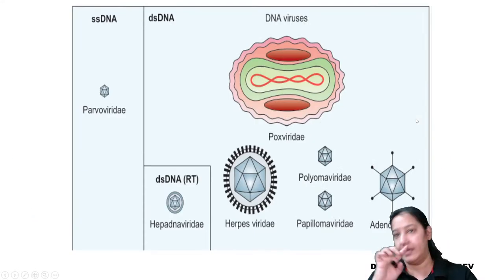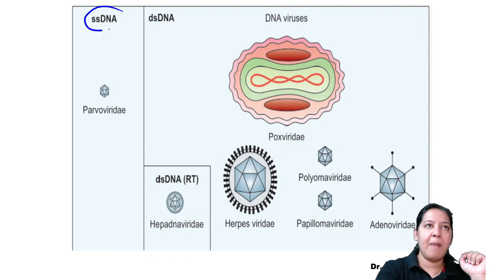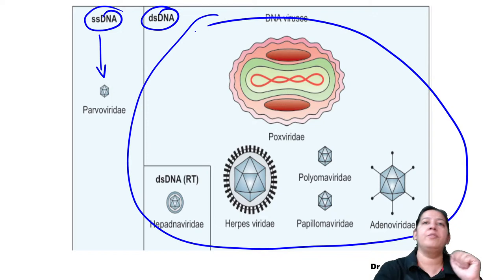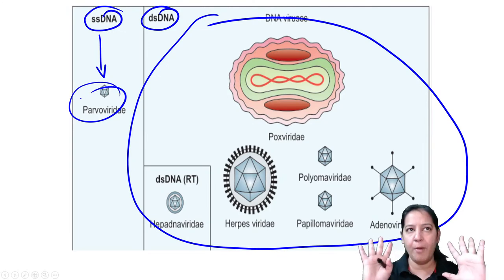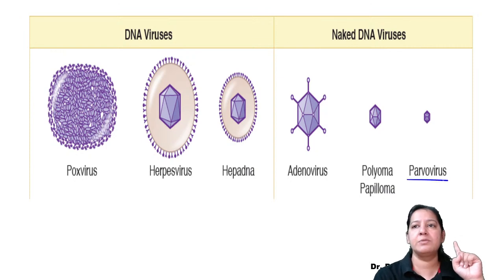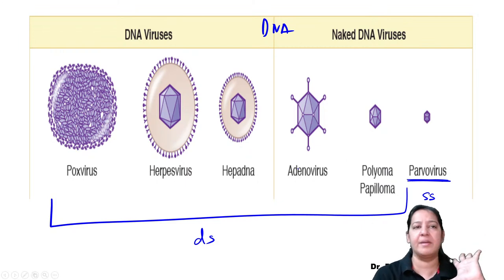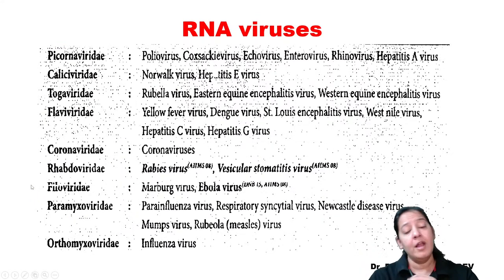This is an exception you must learn. All DNA viruses have double-stranded DNA except Parvo virus, which has single-stranded DNA. Only Parvo is single-stranded; remaining five are double-stranded. All are DNA - but only one is single-stranded and remaining five are double-stranded. Parvo is the smallest, Pox is the largest. Concepts are clear - let me now cover RNA viruses.